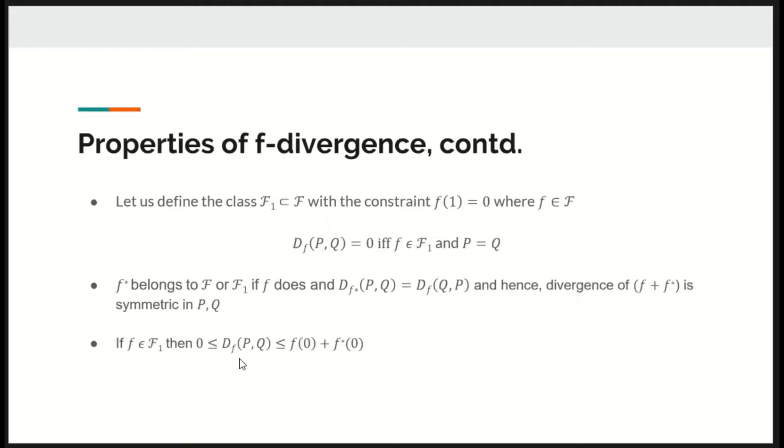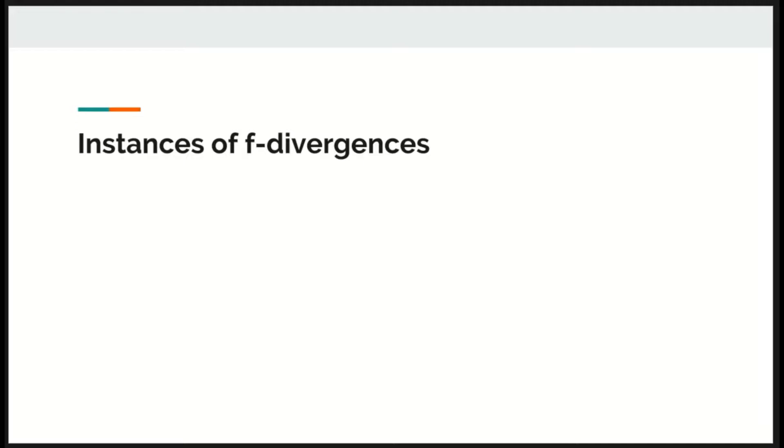If F belongs to class F1 then F-divergence between P and Q is greater than or equal to 0 and is less than or equal to F of 0 plus F-star of 0.